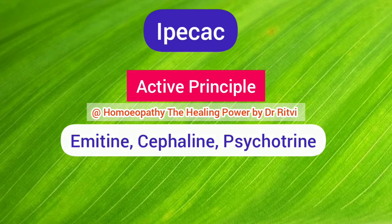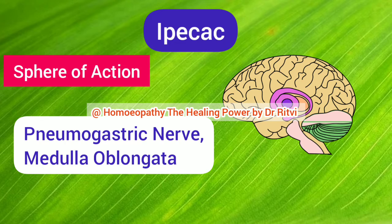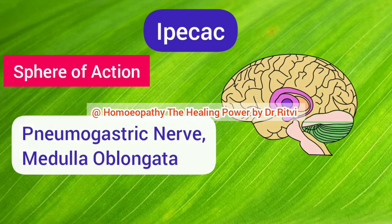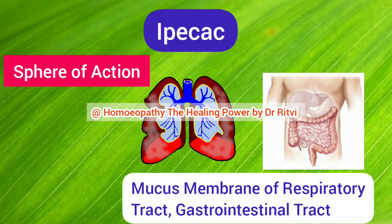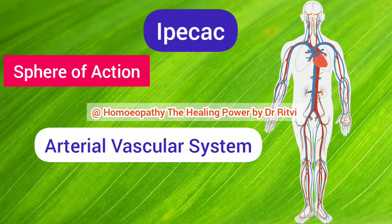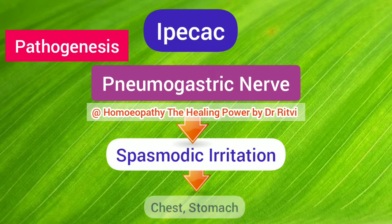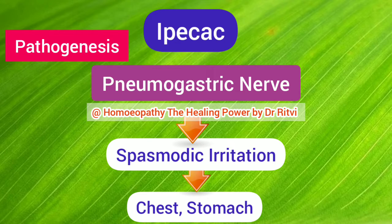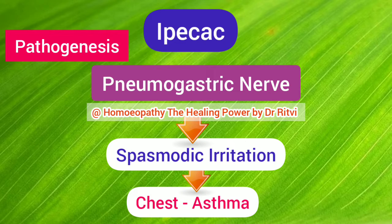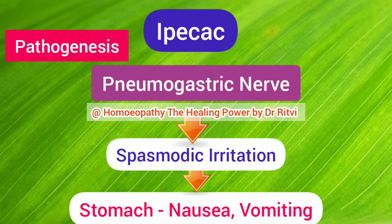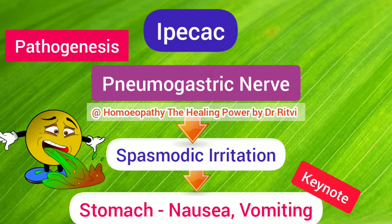Ipecac chiefly acts on the pneumogastric nerve and medulla oblongata. It also acts on the mucous membrane of the respiratory tract and of the gastrointestinal tract, and has its main action on the arterial vascular system. By acting on the pneumogastric nerve, Ipecac produces spasmodic irritation — seen in the chest and stomach. When this spasmodic irritation is produced in the chest it produces asthma, and when seen in the stomach it produces nausea and vomiting — which is the keynote and most prominent symptom of Ipecac.